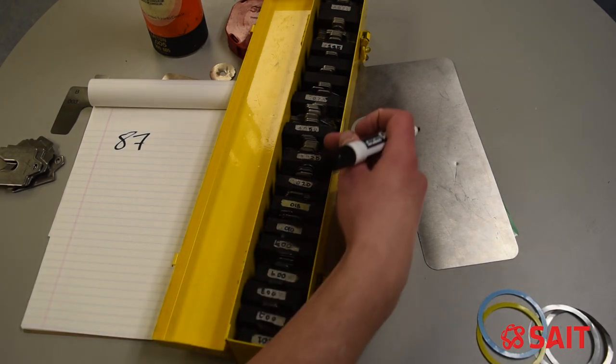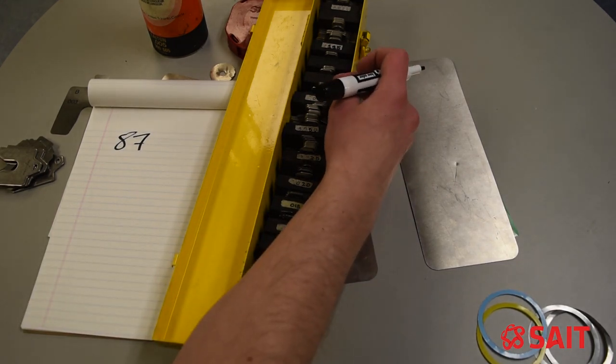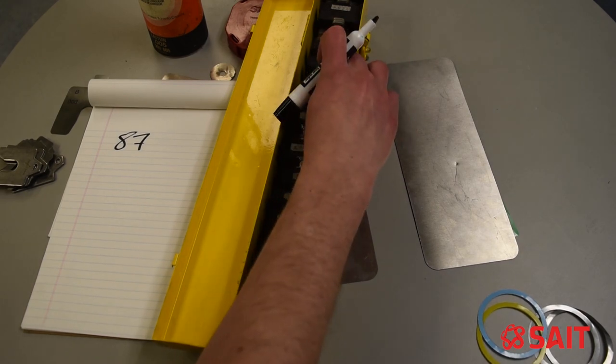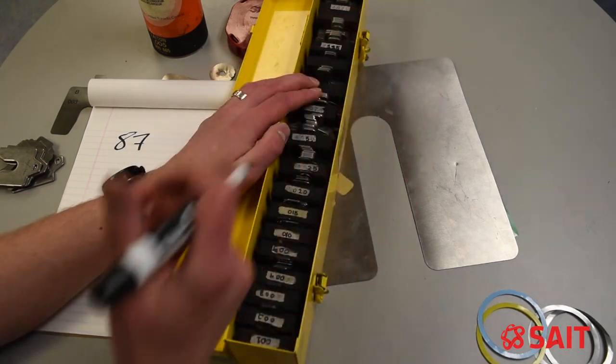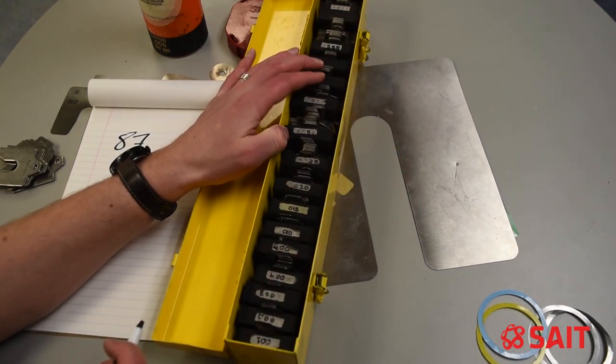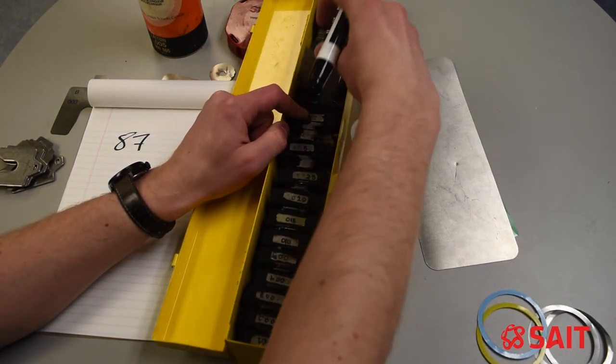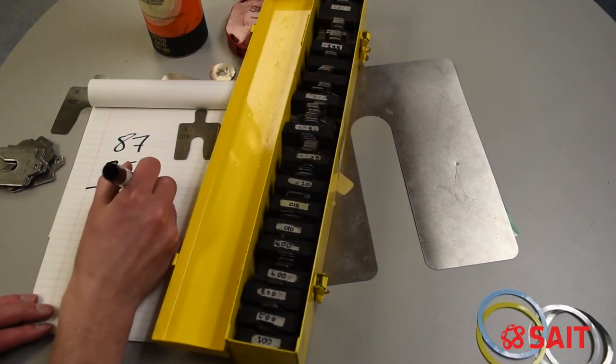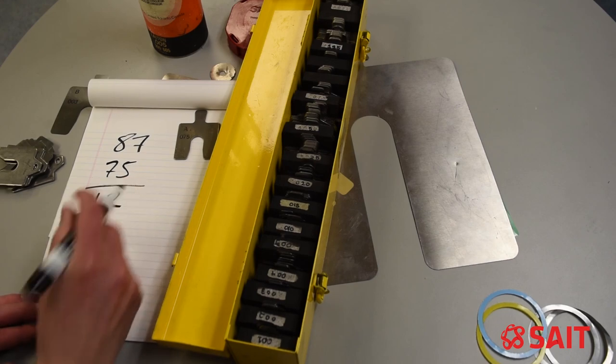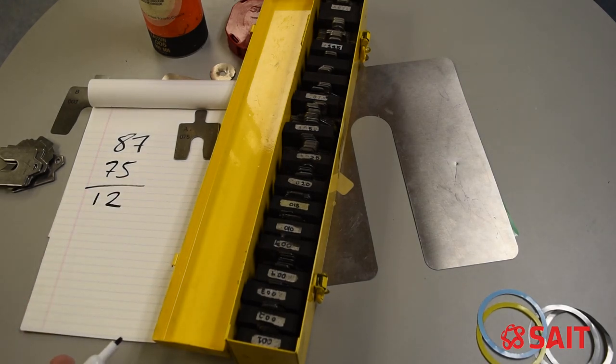The way I would start is finding a shim that is closest to 87 thousandths without going over. So looking through our kit here, we have 50 thousandths, 25 thousandths, we have 75 thousandths shims. The next size up are 100 thousandths shims. Well 100 thousandths are too large, so let's stick with the 75 thousandths shim. Our remainder is 12. We still have 12 thousandths of an inch to fill.